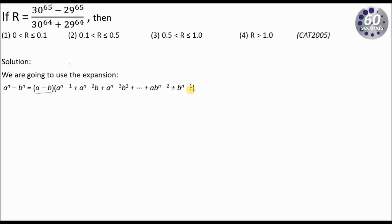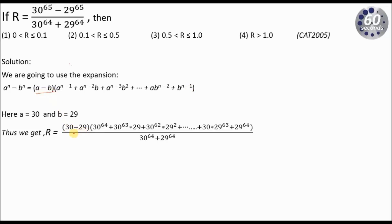We can use this expression to solve this question very easily. The numerator is in the form of a to the power n minus b to the power n, where a is 30 and b is 29, and n is 65. Expanding the numerator gives us 30 minus 29 multiplied by: 30 to the power 64, plus 30 to the power 63 times 29 to the power 1, and so on, finally ending with 30 to the power 1 times 29 to the power 63, plus 29 to the power 64.